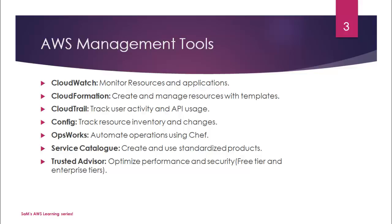Then we have OpsWorks, which uses Chef — an interesting tool most people will know. It helps you automate your infrastructure. If you have hundreds or thousands of servers, you can automate all operations using Chef. AWS uses the capabilities of Chef to help you automate operations across your infrastructure — that's what OpsWorks does.